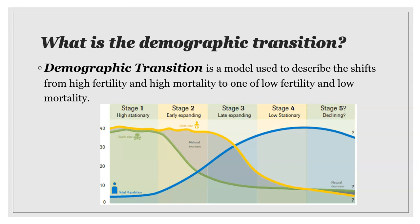In recent years, a few countries, primarily in eastern and southern Europe, have reached a negative rate of natural increase as their death rates exceed birth rates. Possible examples of stage five are Croatia, Estonia, Germany, Greece, Japan, and Portugal. According to the demographic transition model, each of these countries should have a negative population growth, but this has not necessarily been the case due to immigration. For example, the United States would technically be below the replacement level of 2.1, but immigration keeps the population increasing.